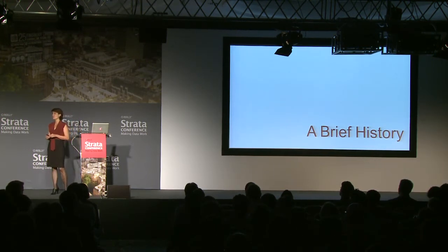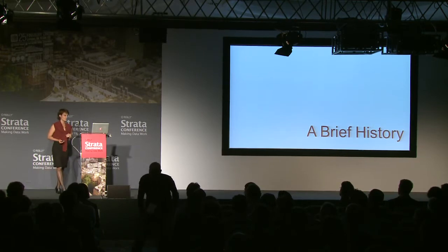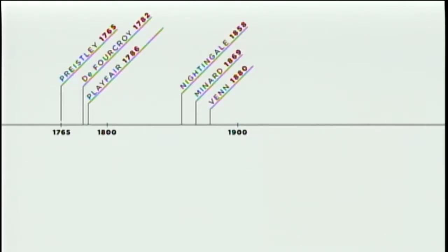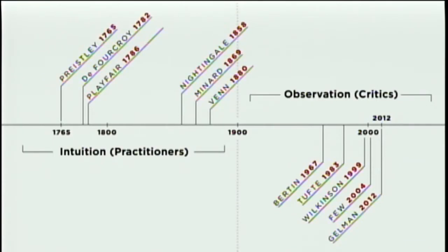But this is a recent problem. The history of visualization goes back to roughly the 14th century, but there was a golden age from about the mid-1700s to 1900s, where a lot of really cool things were produced and a lot of people were doing interesting things. And then something interesting happened very recently — people started assessing the efficacy of graphs and charts, and cataloging best practices or the right way to do things.